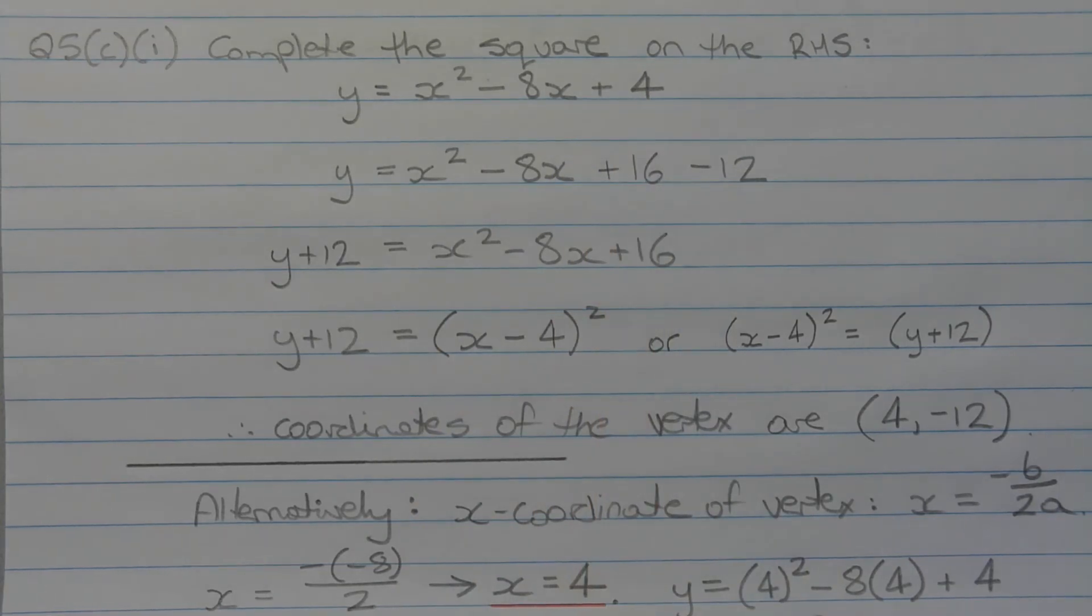Now, to complete the square, we halve the middle term, so we're going to halve negative 8, so we get negative 4, and then square it. So the square of negative 4 is positive 16, so I'm going to add the positive 16 here. But we can't just turn plus 4 into plus 16 without compensating for it somewhere else. So if I'm adding 16 here, I need to take away 12 such that the net result of this is plus 4.